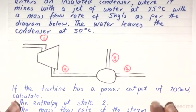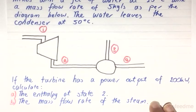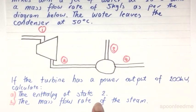So the question is asking us that if the turbine has a power output of 200 kW, calculate a) the enthalpy at state 2 and b) the mass flow rate of the steam.